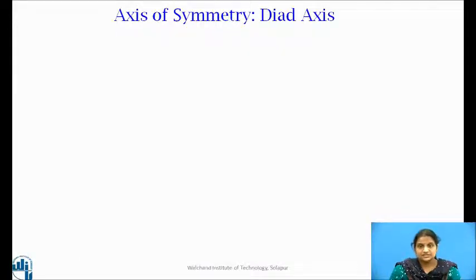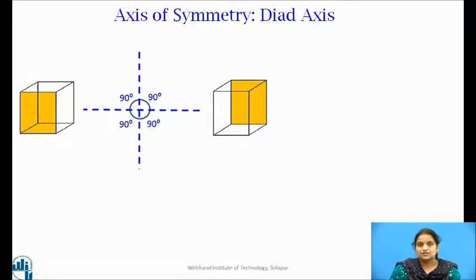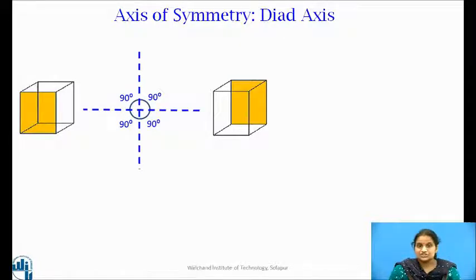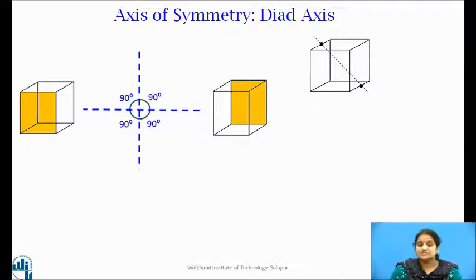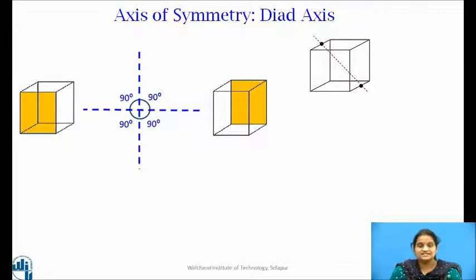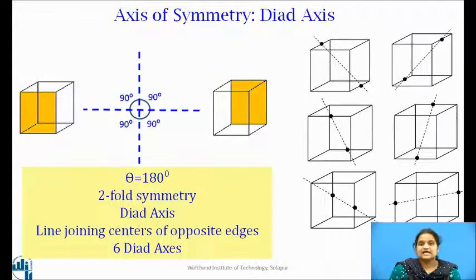The cubic crystal possesses 3 types of axes of symmetry. For 2-fold symmetry, the crystal is rotated through 180 degrees. A rotation of 180 degrees shows one position of the crystal, and a second rotation of 180 degrees achieves the self-coincidence position. Therefore, it is 2-fold symmetry and the axis is called the diad axis. A line joining the middle points of a pair of opposite parallel edges provides a diad axis. As there are 12 edges in a cube, the number of diad axes is 6.